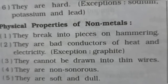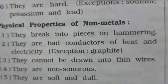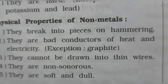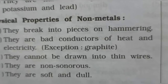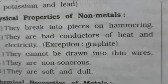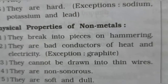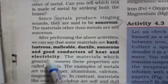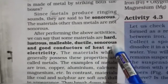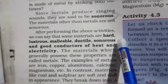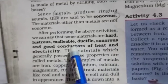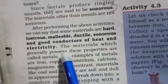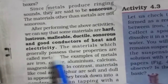The physical properties of metals and non-metals are detailed in the textbook material that you can read. After performing the above activity, you will know that some materials are hard, lustrous, malleable, ductile, sonorous, and good conductors of heat and electricity. The materials which generally possess these properties are called metals.